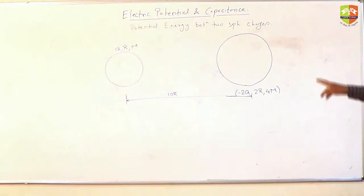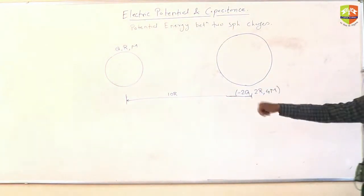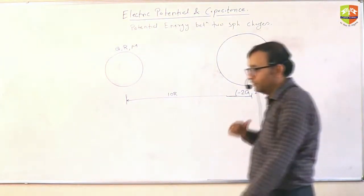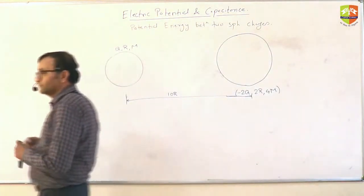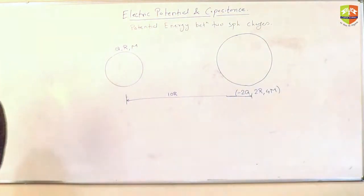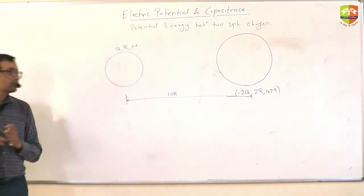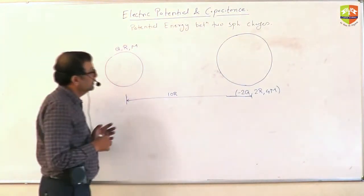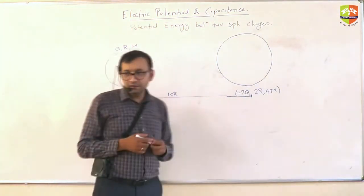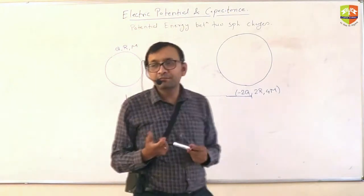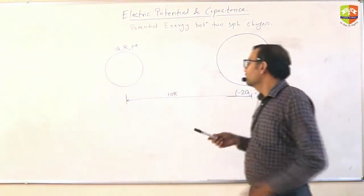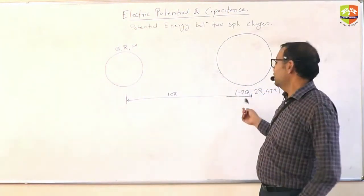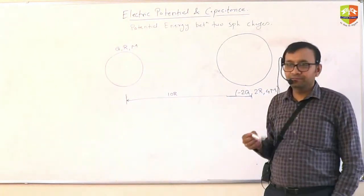Only two charges are there, so only one potential energy term. When they are just touching, center to center distance will be R plus 2R — that is 3R.